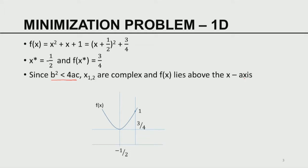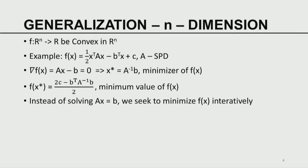Generalizing to n dimensions: we consider scalar-valued functions of a vector that are convex in Rⁿ. A typical convex function in Rⁿ is the quadratic form ½xᵀAx − bᵀx + c, where A is a symmetric positive definite matrix. Using multivariate calculus, the gradient of f is Ax − b, so at the point where the gradient vanishes, x* = A⁻¹b is the minimizer.